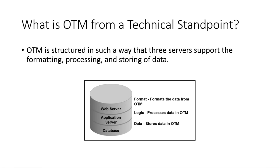From a technical standpoint, OTM is a multi-tier application with three tiers: web layer, application layer, and database layer. The web layer handles the look and feel of the application — what end users see. The application layer is where all the logic, automations, and planning criteria reside; it processes the data and presents it via the web server. The database layer stores all the data. You need a web server, application server, and database server.